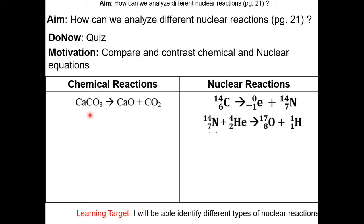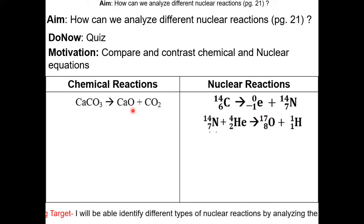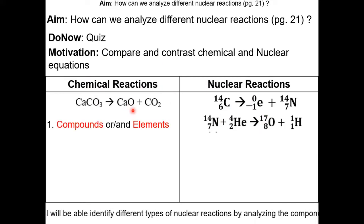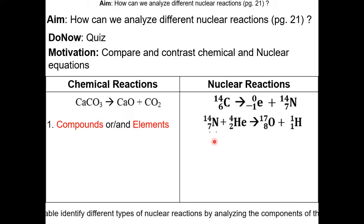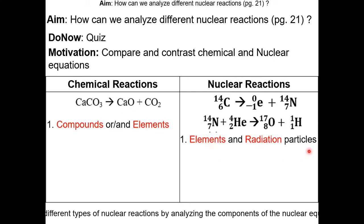Here we have a chemical reaction, and here are two examples of nuclear reactions. For chemical reactions, they have compounds and elements. For nuclear reactions, they have elements and radiation.